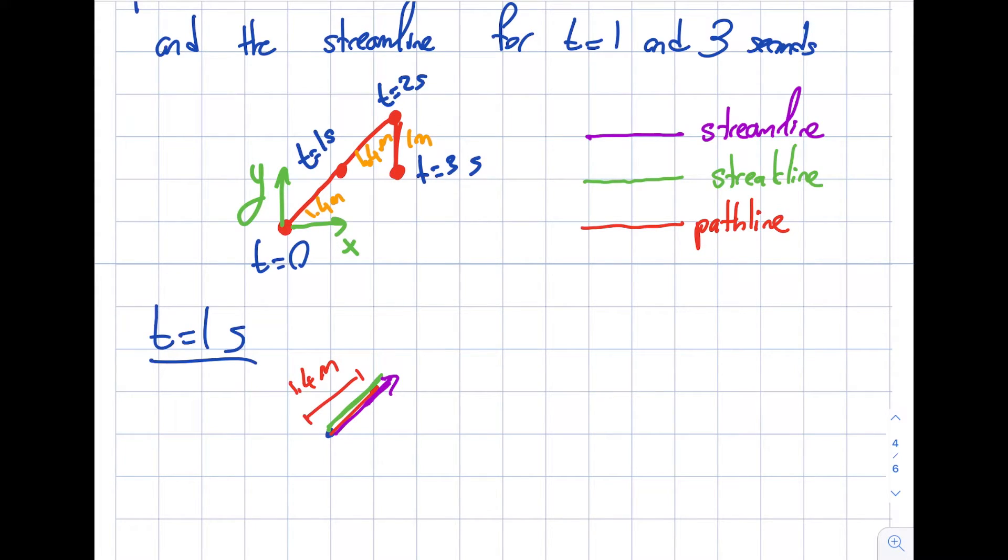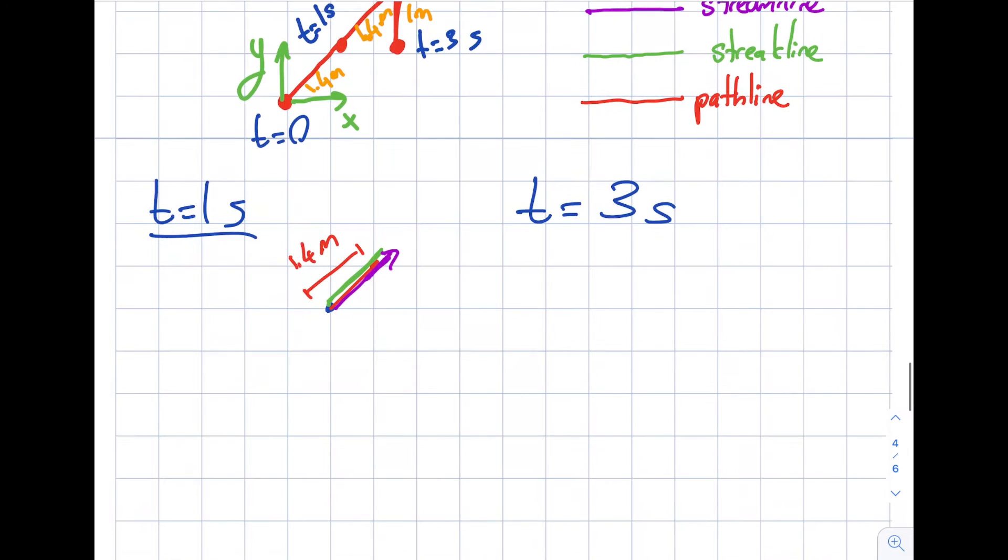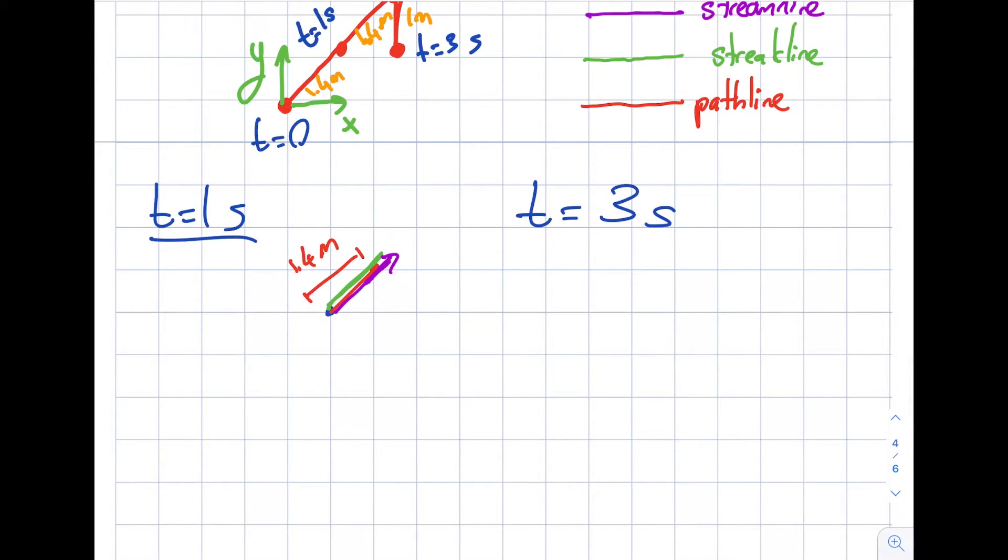Now the tricky part is when it goes to three seconds. The flow is not steady anymore for t equals three seconds. I will start with the path lines because that's given to me. Calling this t equals zero, at one second it will be here, then here, and then like this. This is the path line that's given to me.